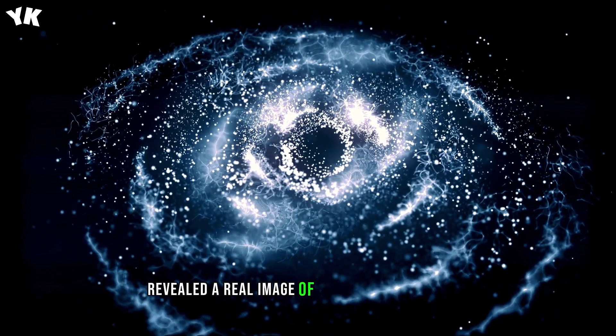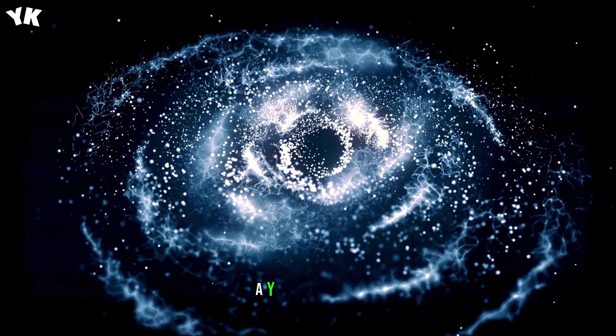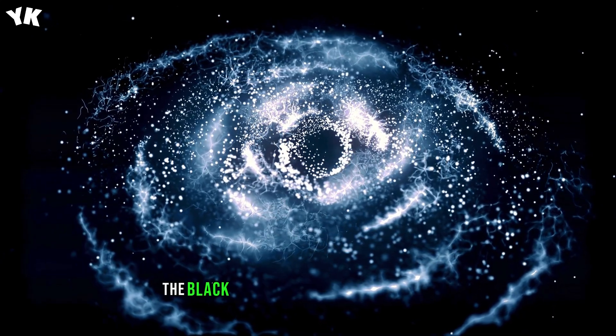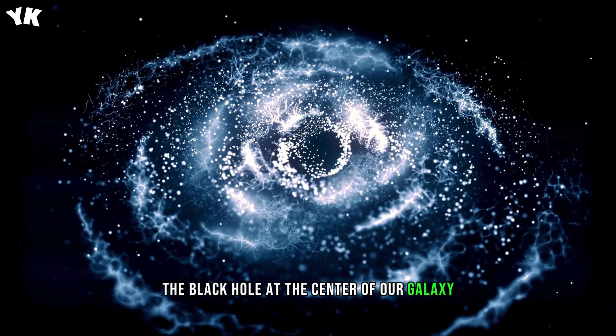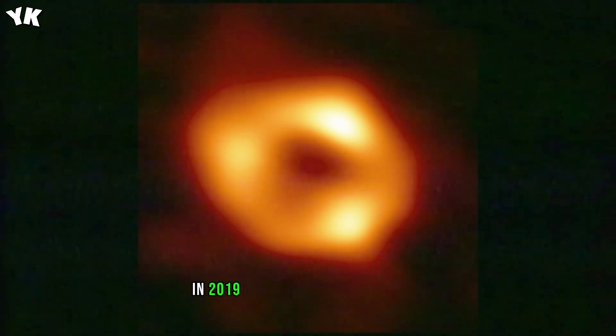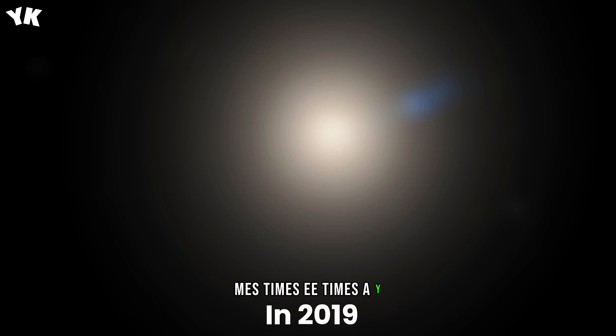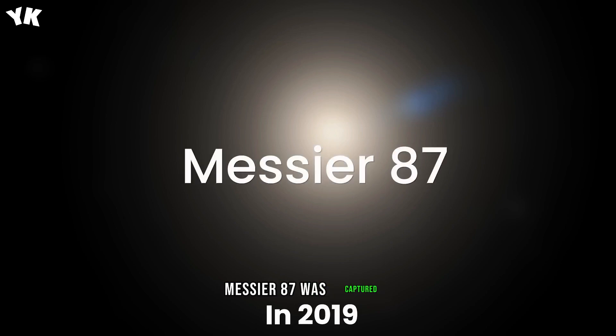Astronomers revealed a real image of Sagittarius A asterisk, the black hole at the center of our galaxy. In 2019, an image of the black hole in distant galaxy Messier 87 was captured, and it looks much like Sagittarius A asterisk, but their similarity is no mystery.